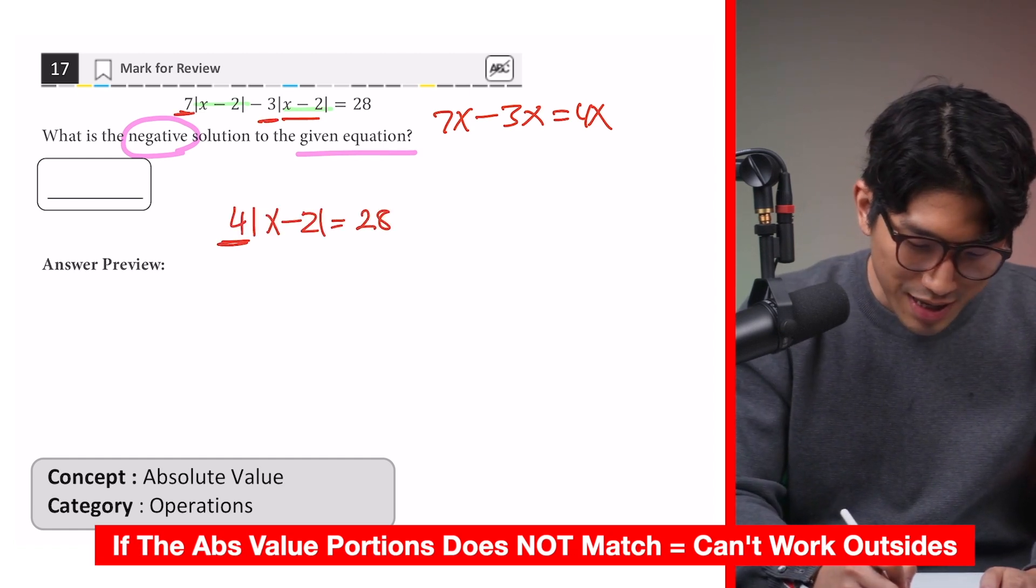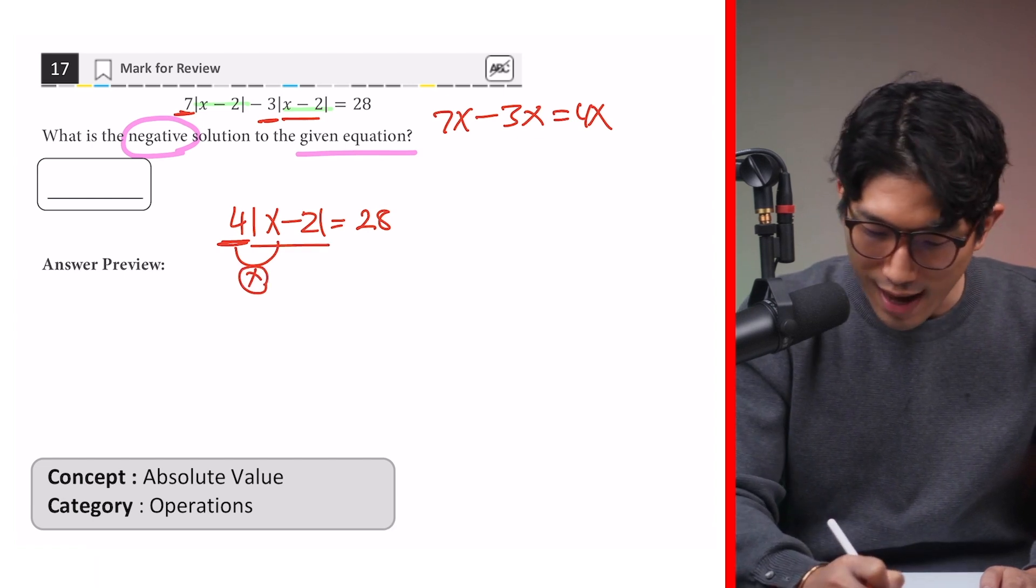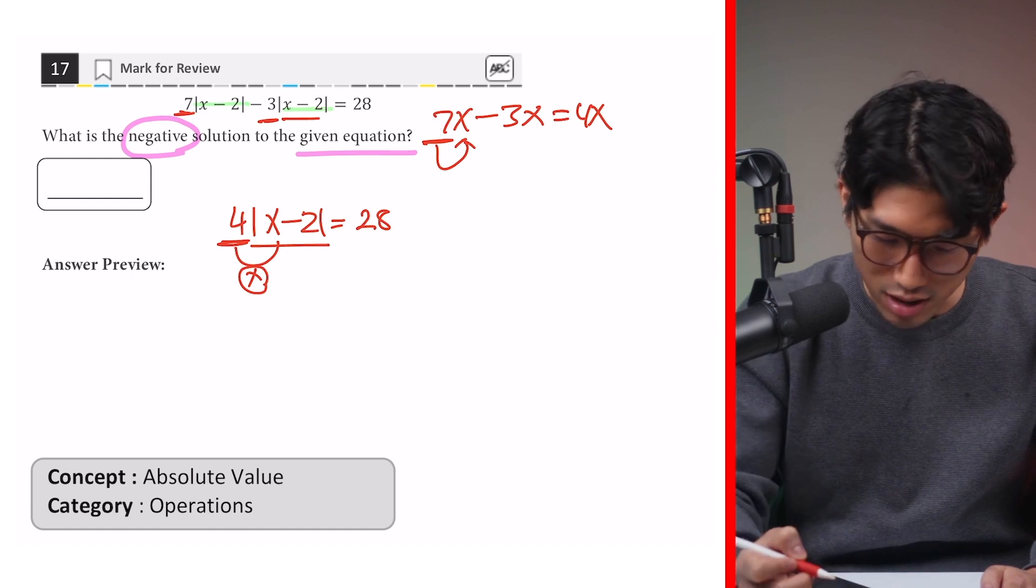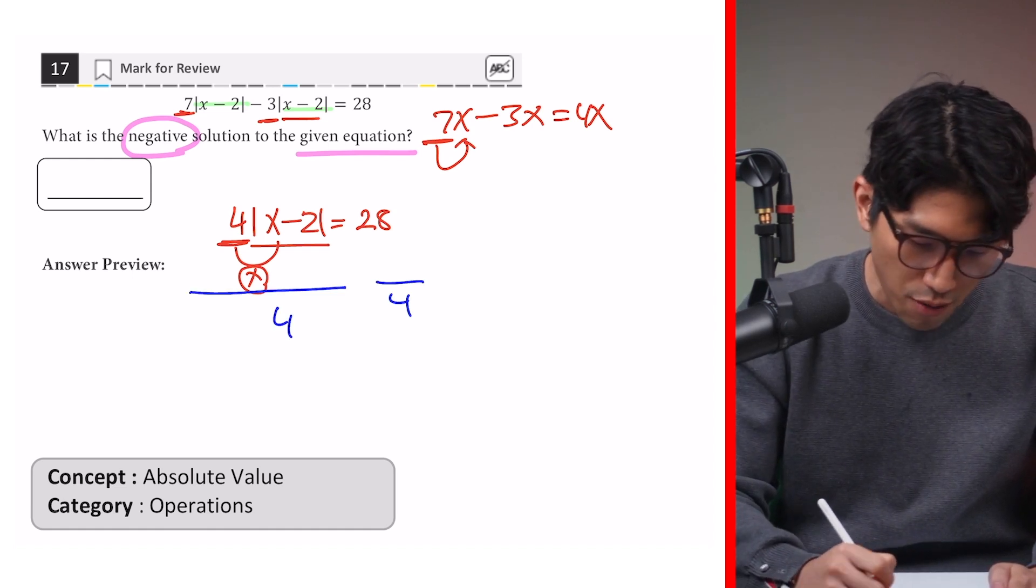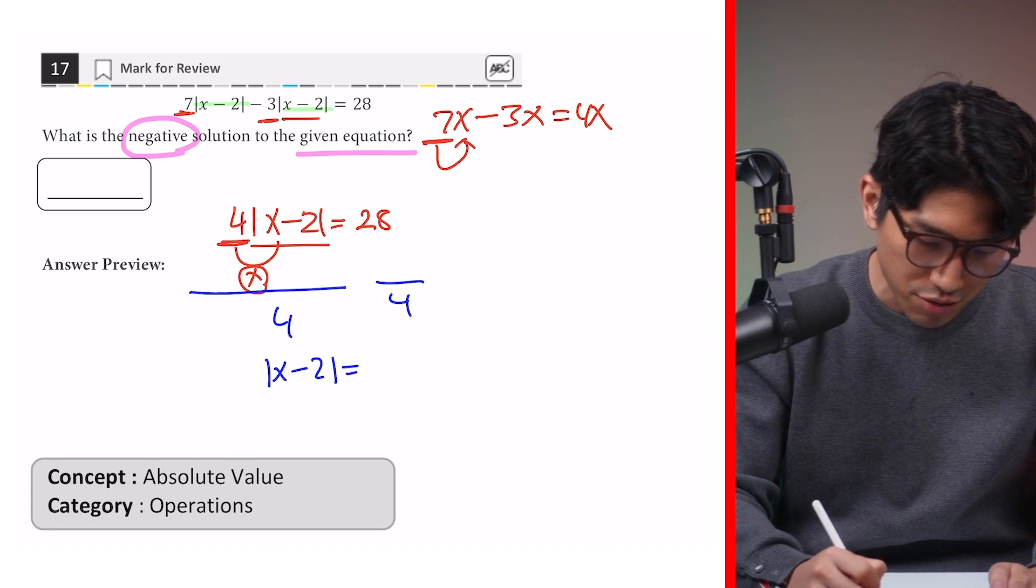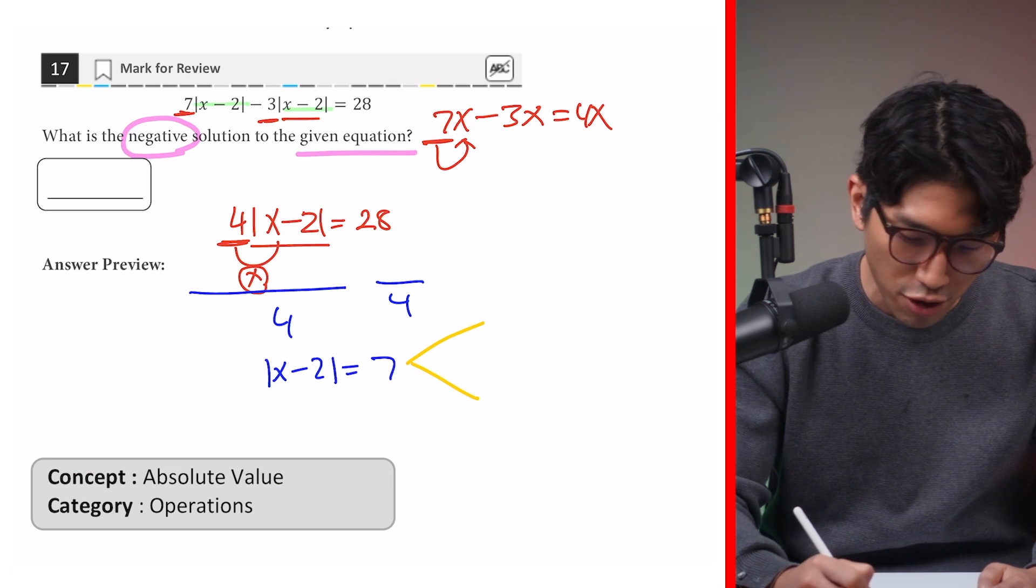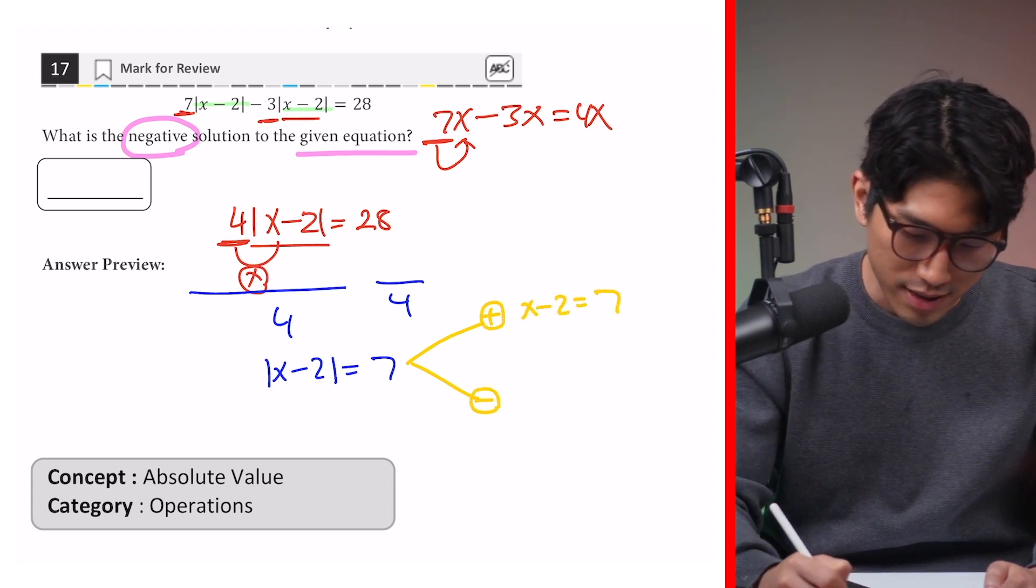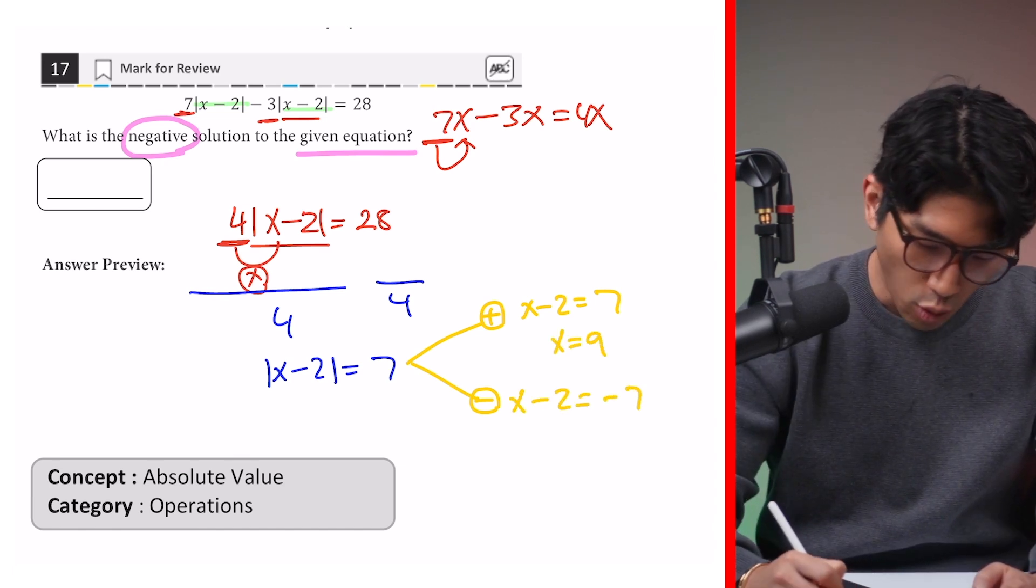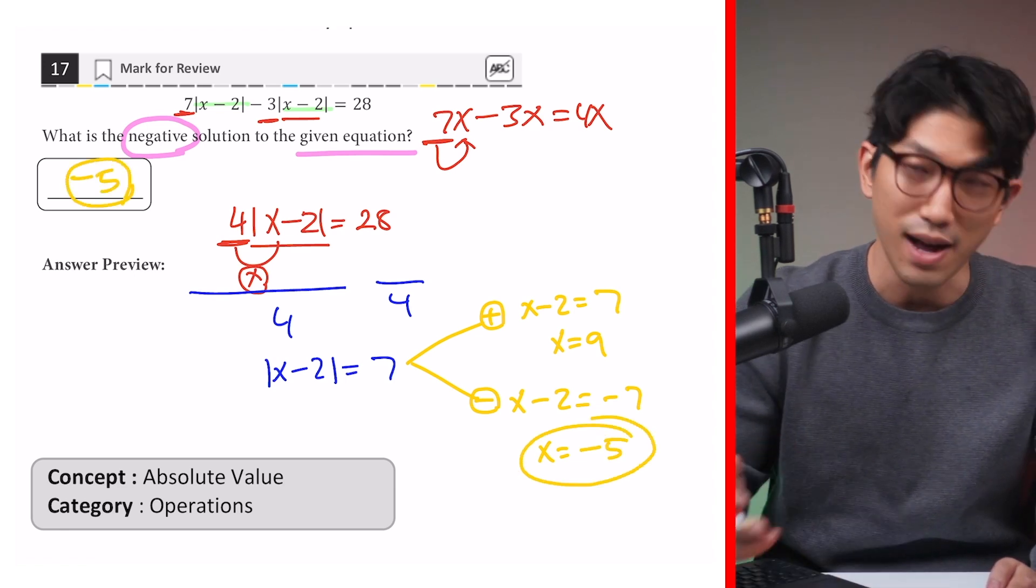And from here, this 4 on the outside is being multiplied to this absolute value portion right here, just like how 7 is being multiplied to x. So to get rid of it, we're just going to simply divide both sides by 4, and we're going to get absolute value of x minus 2 is equal to 7. And from the absolute value lecture, we have learned that absolute values have two versions, both positive and negative. For positive, it's going to be x minus 2 is equal to positive 7. Negative x minus 2 is equal to negative 7. x is 9 or x is equal to negative 5, which means our answer is going to be negative 5.